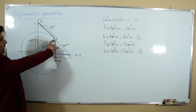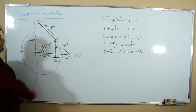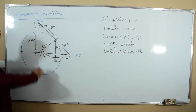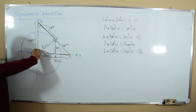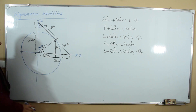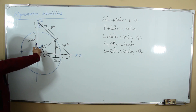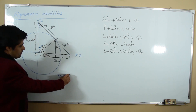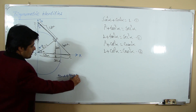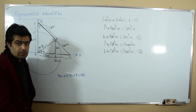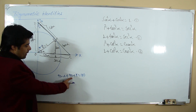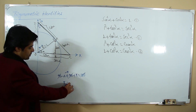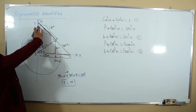In the third triangle, we also have 90°. Suppose the unknown angle is X. We know one angle is 90° and another is 90° minus alpha. The sum of interior angles of a triangle is 180°, so 90° + (90° - α) + X = 180°. The 90s cancel to give 180°, and solving gives X = α. So this angle is also alpha, confirming all three triangles OAB, OAC, and OAD are similar.